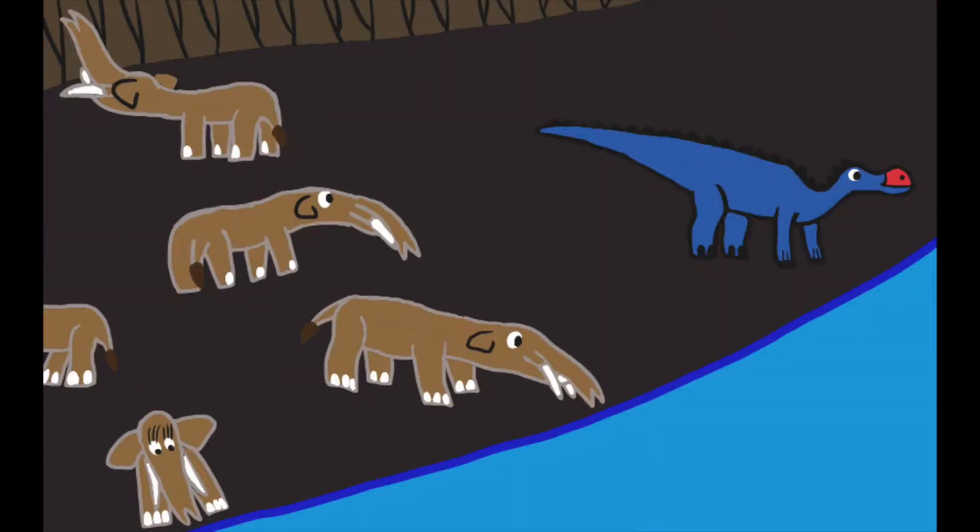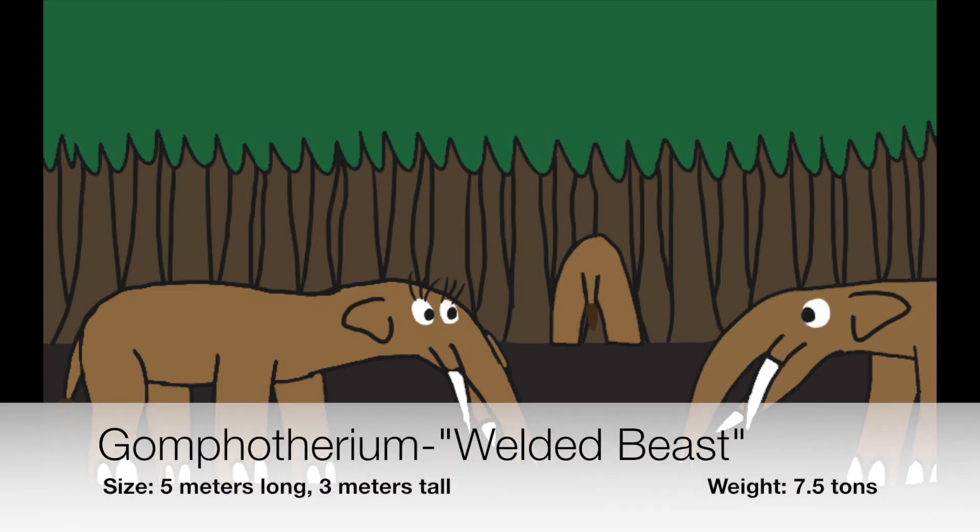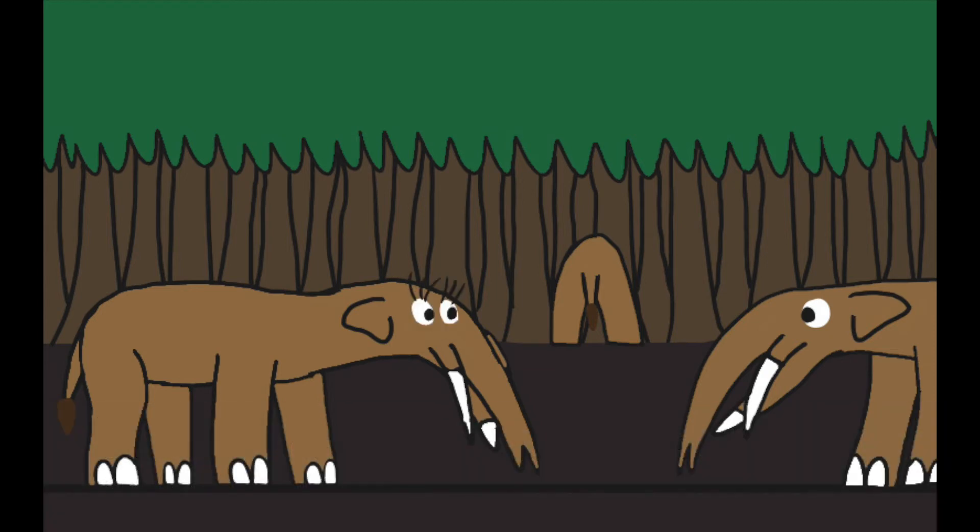Right next to the Gryposaurus is a small herd of gomphotheriums. An average adult weighs as much as an adult African elephant. Unlike other elephant species, God made the upper tusks to point downward and not upward. But the best distinguishing characteristic of the gomphotheriums are their lower jaws the shape of a garden hand weeding trowel.